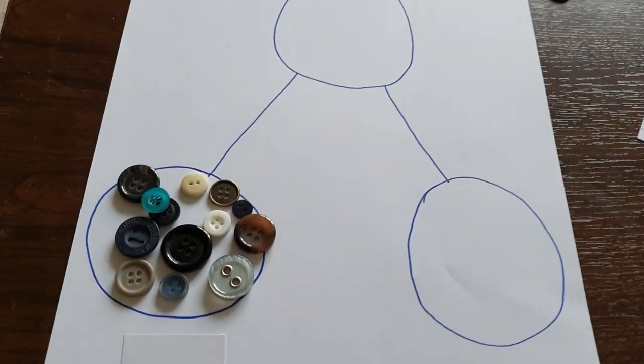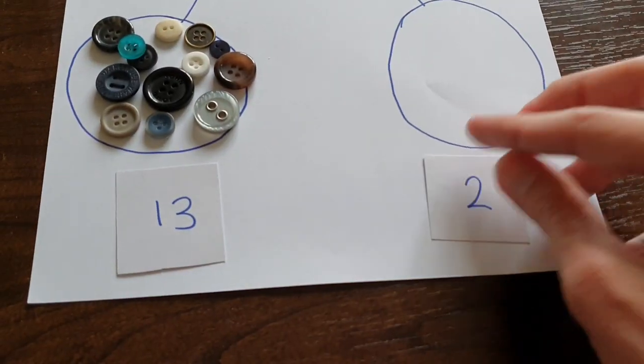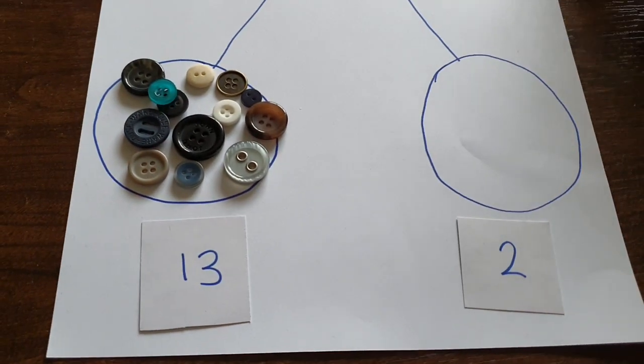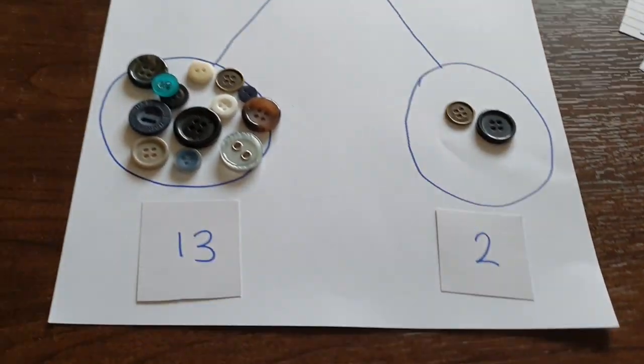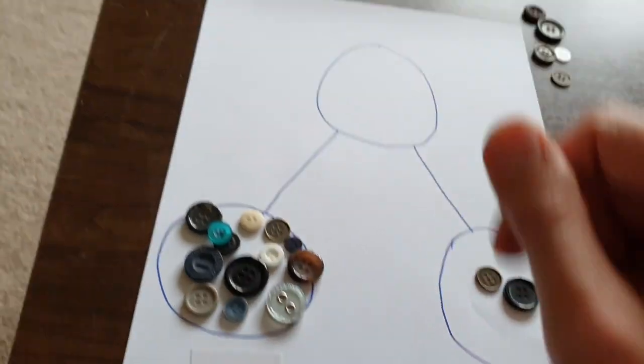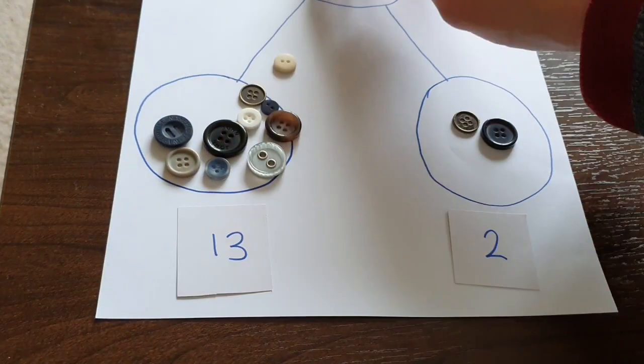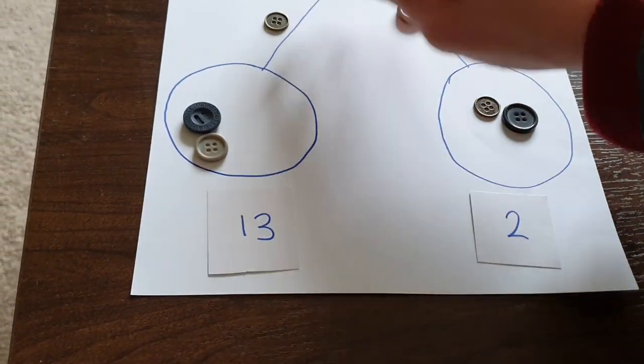So 13 is a part and 2 is a part. And then when you want to find out what they make together, what's the whole, you just move them all over into the whole.